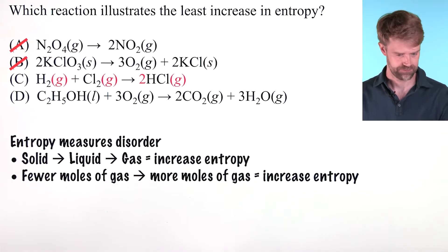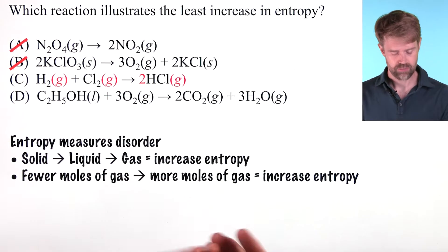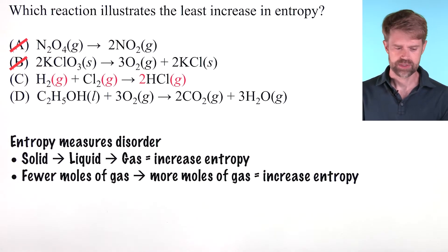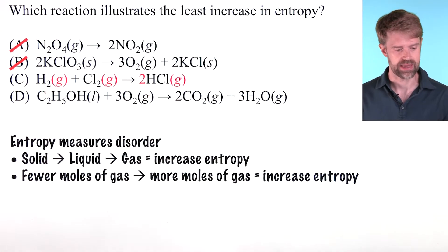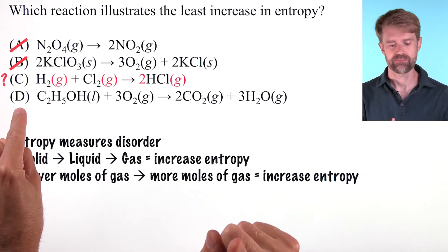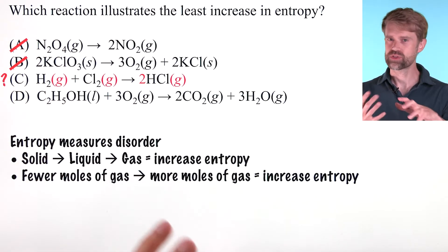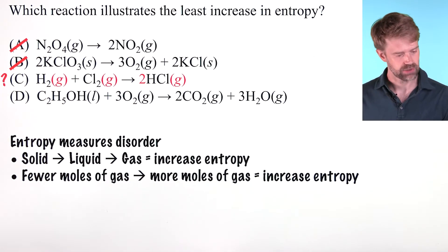Now choice C. Here we have one, two, two moles of gas producing two moles of gas. So this is probably going to be about the same level of entropy from beginning to end. Now, we haven't seen choice D yet, so we can't cross off C. We don't know if it's right, so let's just put a little question mark beside it and take a look at D.